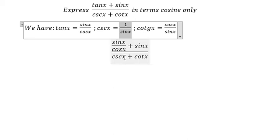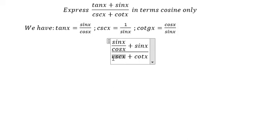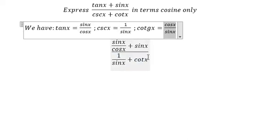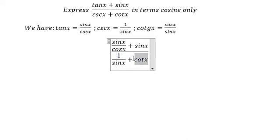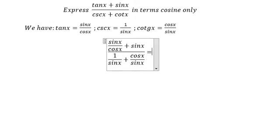We substitute this one, this one, and that one. Now we have a common denominator, so we can combine: 1 over cos x plus cos x over sine x.